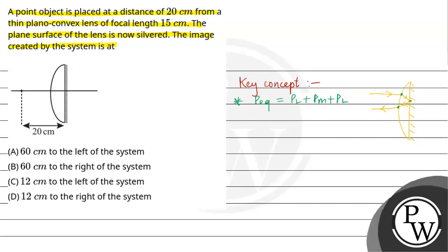So lens ka do-do bar likhenge, P_L P_L, aur mirror ko ek bar. Equivalent power jo hoga: 2P_L plus P_M. Now, aapka P_equivalent jo hoga, that is, P_equivalent lens ke case mein.